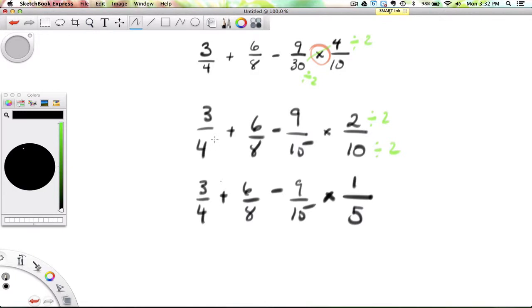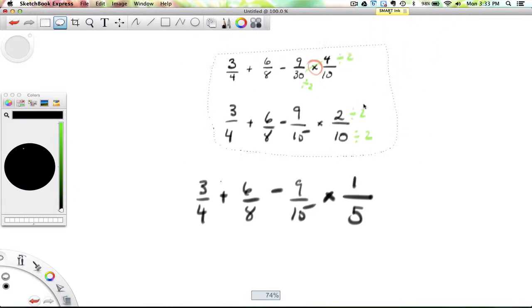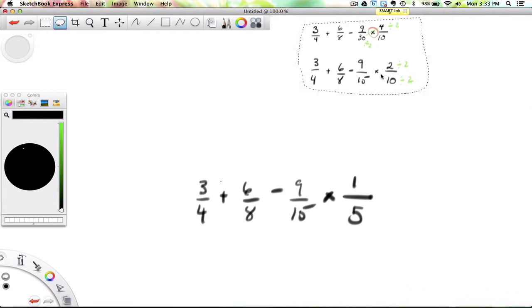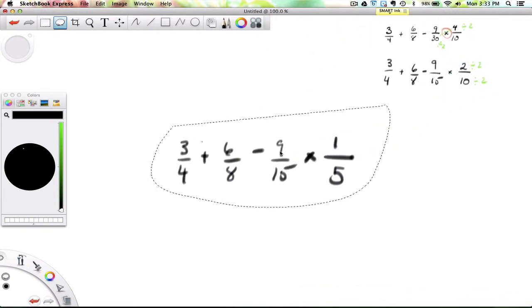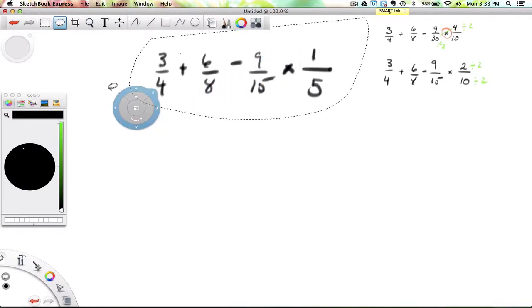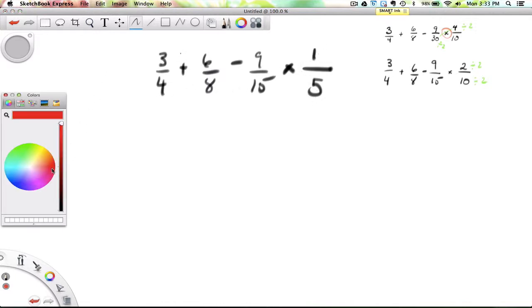Now I'm going to put aside all the other parts. And now we're working on this statement: 3 quarters plus 6 eighths minus 9 fifteenths times 1 over 5. We're still doing the multiplication first because of BEDMAS.